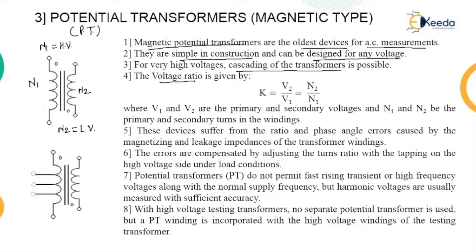The transformation ratio k is given by v2 upon v1 — that is, the secondary voltage divided by the primary voltage — and it is equal to n2 upon n1. If some books represent the electric field induced on the system as e2 upon e1, then the equation extends to: v2/v1 = n2/n1 = e2/e1. Here, v1 and v2 are the primary and secondary voltages, e1 and e2 are the primary and secondary induced EMFs, and n1 and n2 are the primary and secondary number of turns.